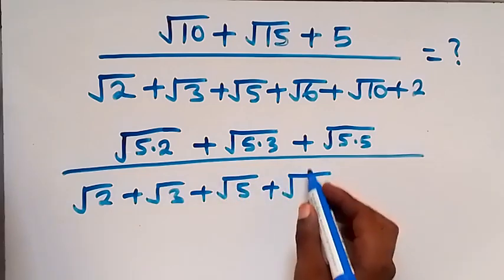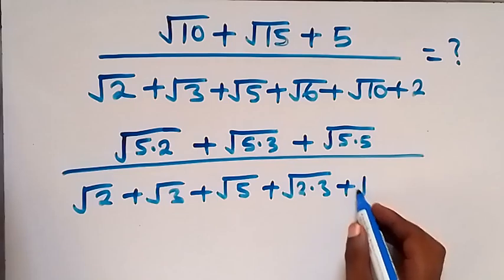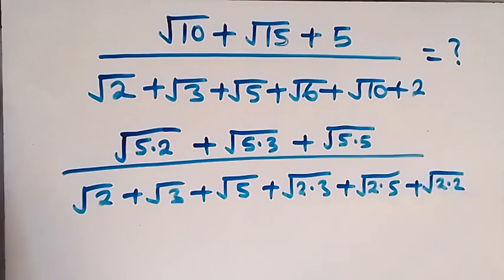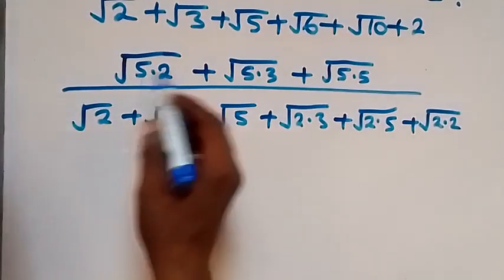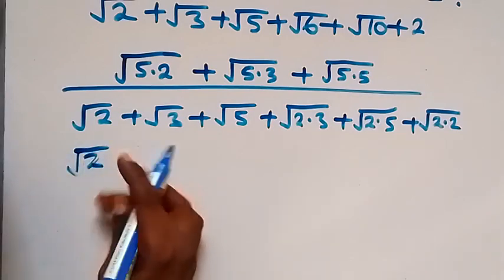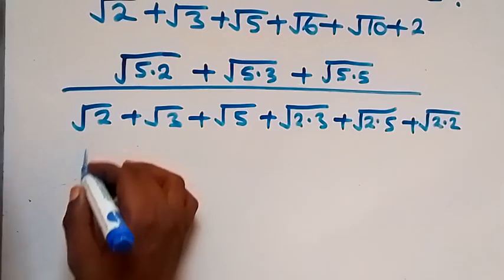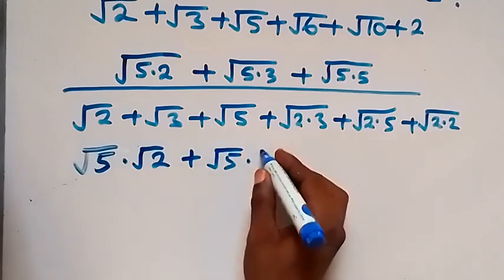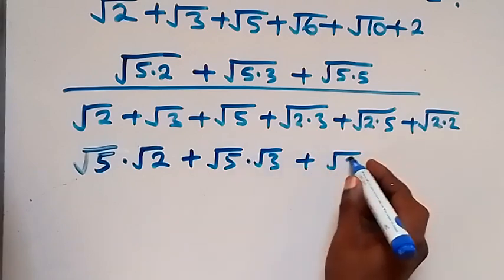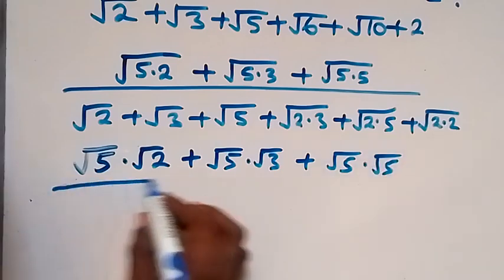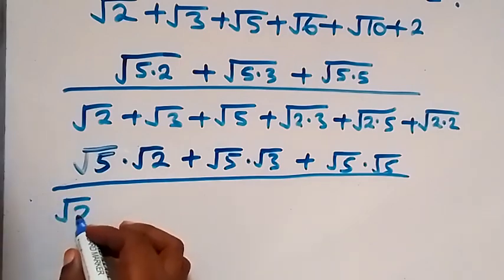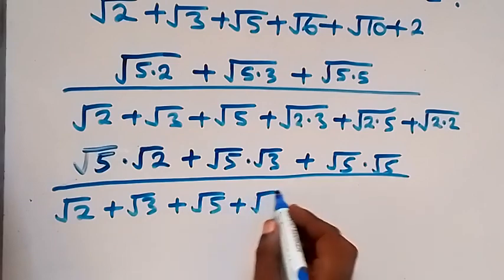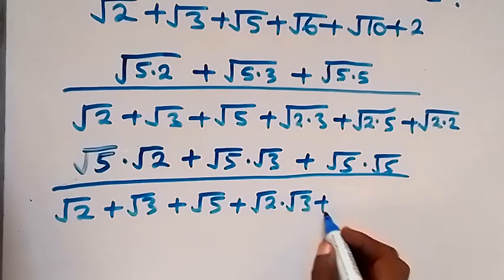Plus root 6 written as 2 times 3, then plus root 10 written as 2 times 5, then plus root 2 written as root 2 times 2. In the next term we can separate this, and this will be root 5 times root 2. So we have root 5 times root 2 up top, then plus root 5 times root 3, then plus root 5 times root 5, then plus root 2 times root 2 times root 2 times root 2.